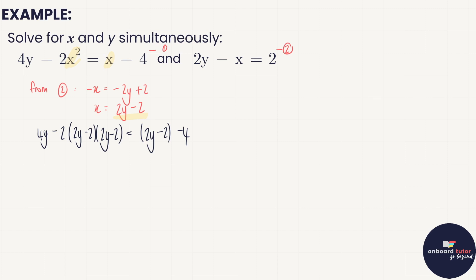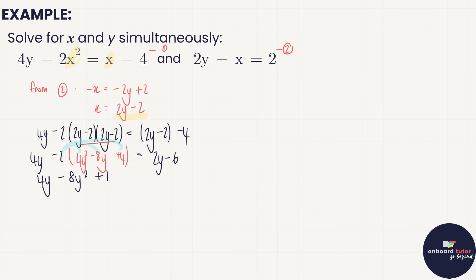The squared bracket expands using the shortcut: square the first gives four y squared, square the last gives plus four, and two y times minus two doubled gives minus eight y. Then we distribute the minus two and collect all terms, moving constants across. So we have four y minus eight y squared plus sixteen y minus eight, then minus two y plus six equals zero.